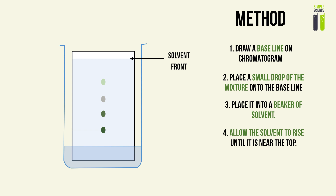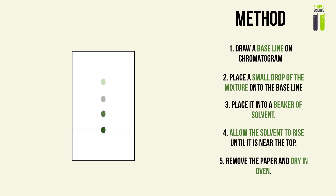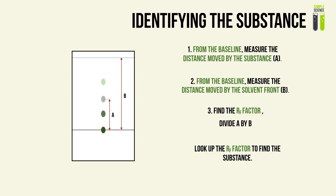Next, we remove our chromatogram and dry it in an oven to obtain our result. To identify the substances, we measure from the baseline: distance A is the distance moved by the substance, and distance B is the distance moved by the solvent front — the highest point reached by the solvent. We then find the retardation factor RF by dividing A by B.